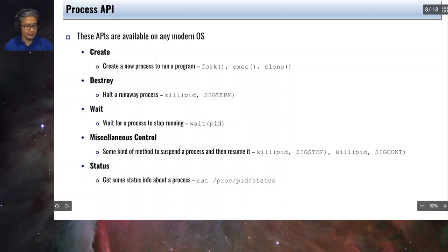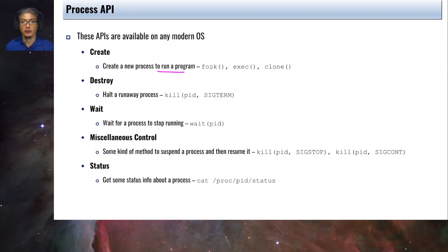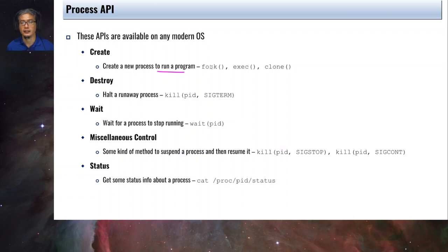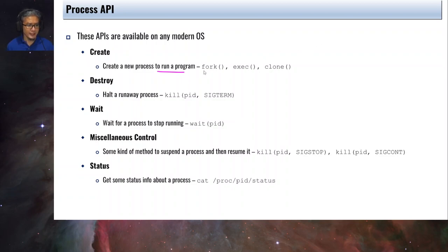The create API will create a new process to run a program. This usually happens when you double-click an icon in a graphical environment, or when you type the name of an executable on the command prompt and press enter. It's important to know that when a user accesses the operating system, they can use either a graphical user interface or a command line interface. In COMSI 125, we would like you to become confident in using the command line interface or terminal.